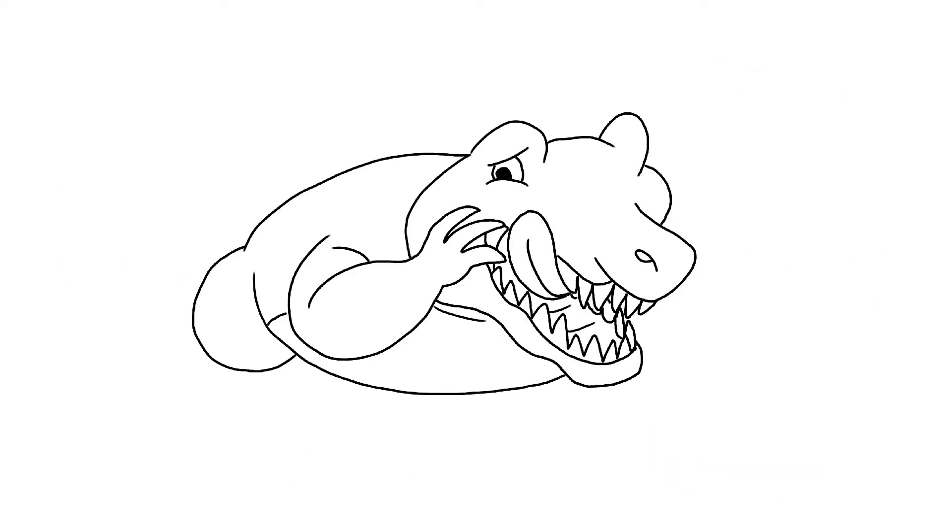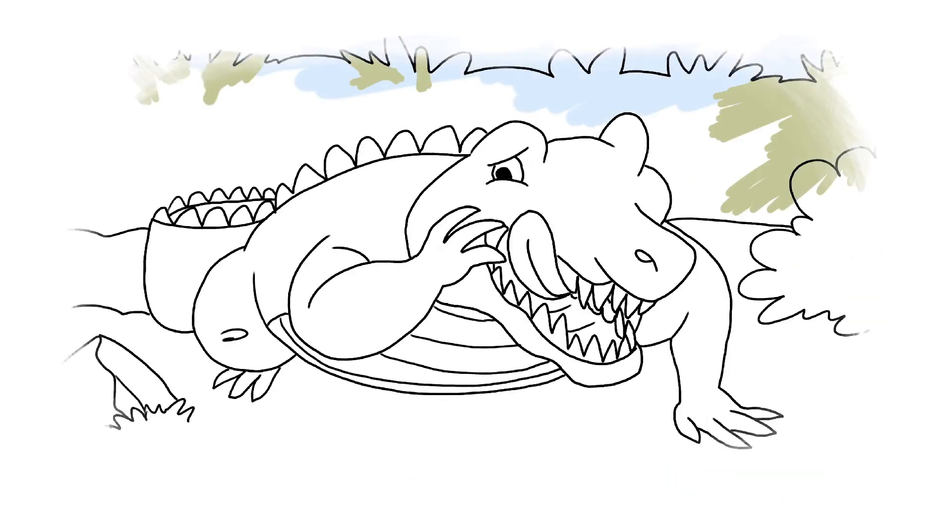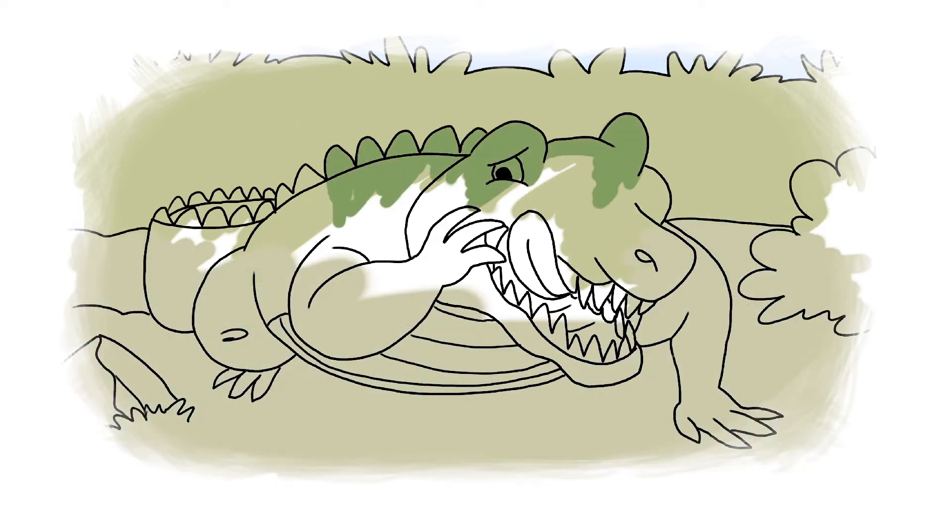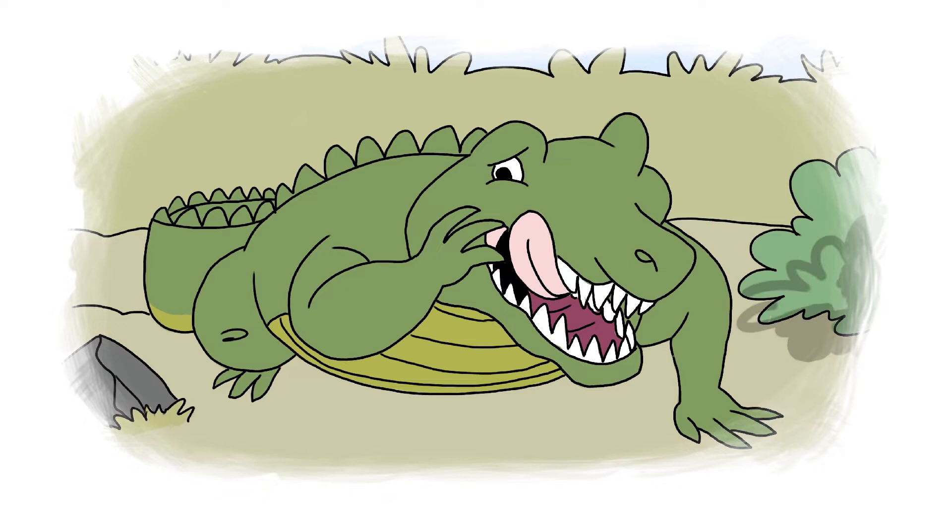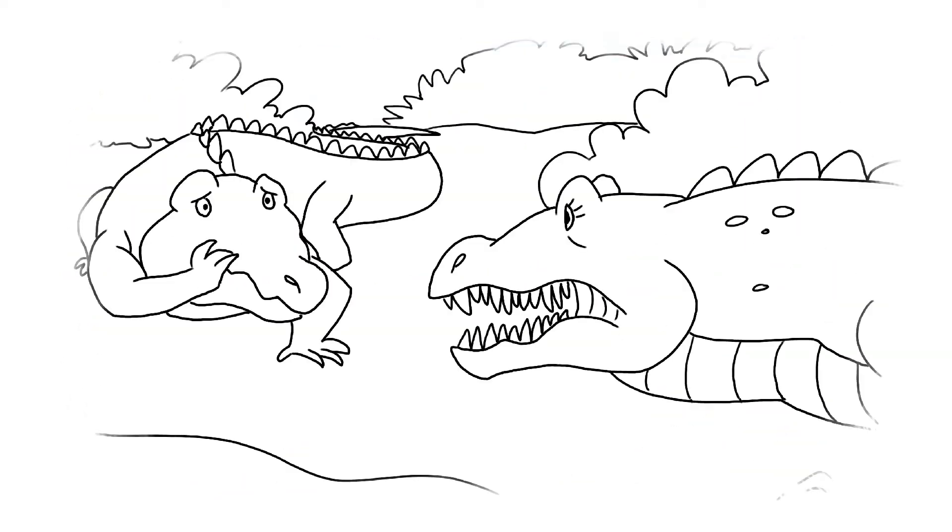One day, Little Croc woke up with an awful toothache. It was right at the back of his big mouth. He shook his head back and forth and tried fiddling at the tooth with his tongue. But nothing helped. Although he was very hungry, he couldn't eat a thing.